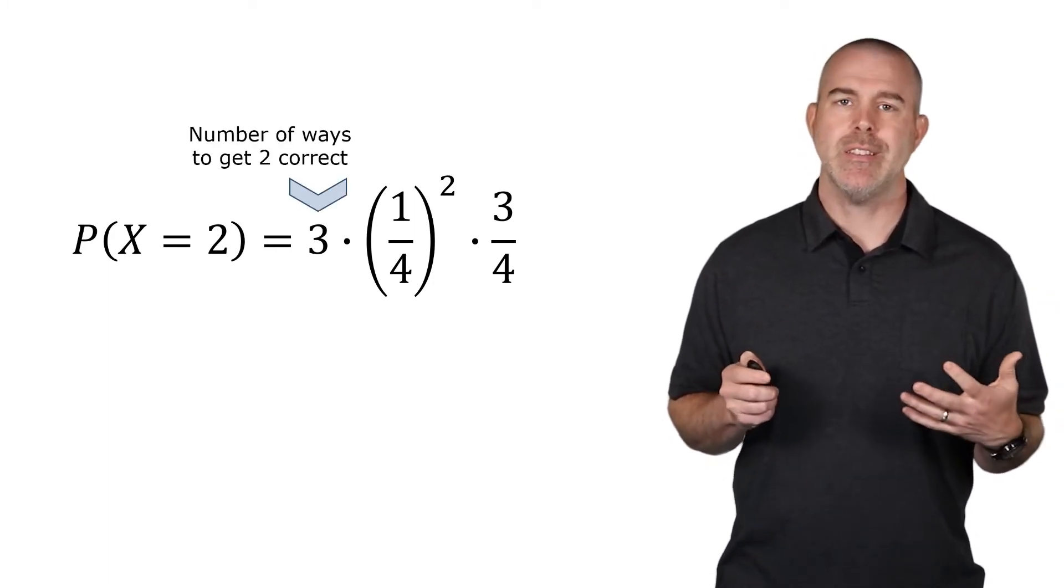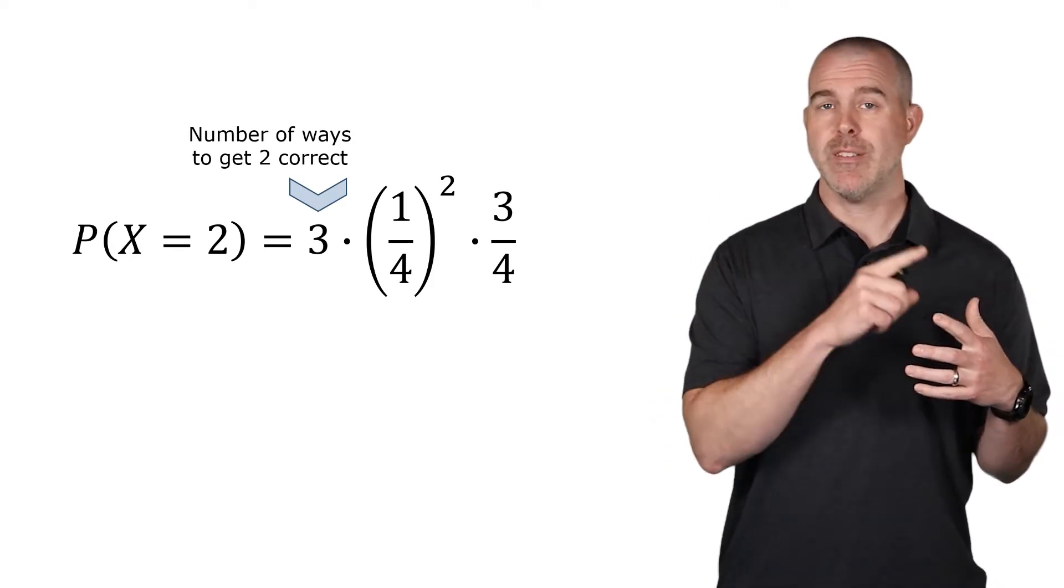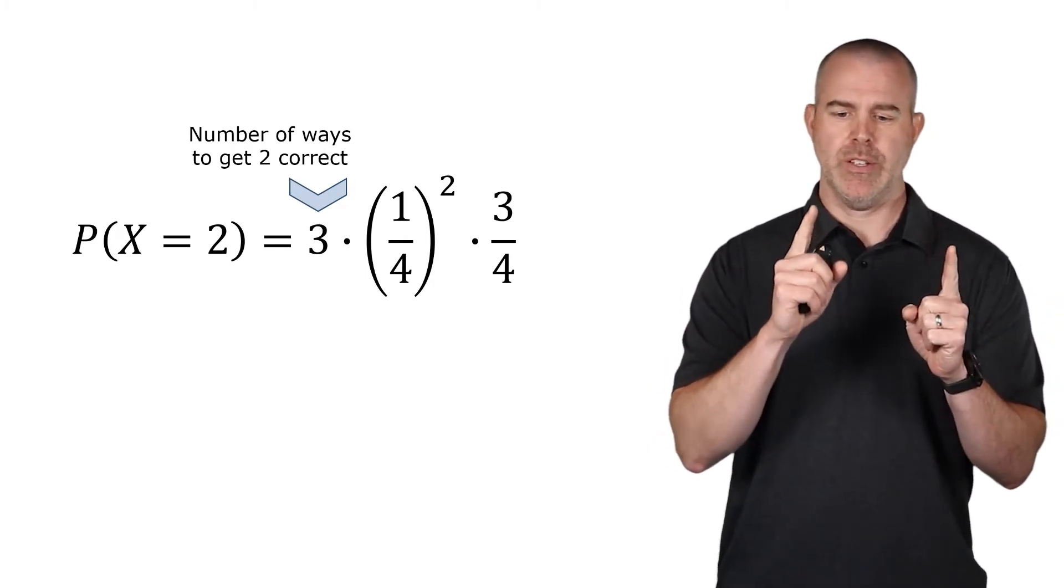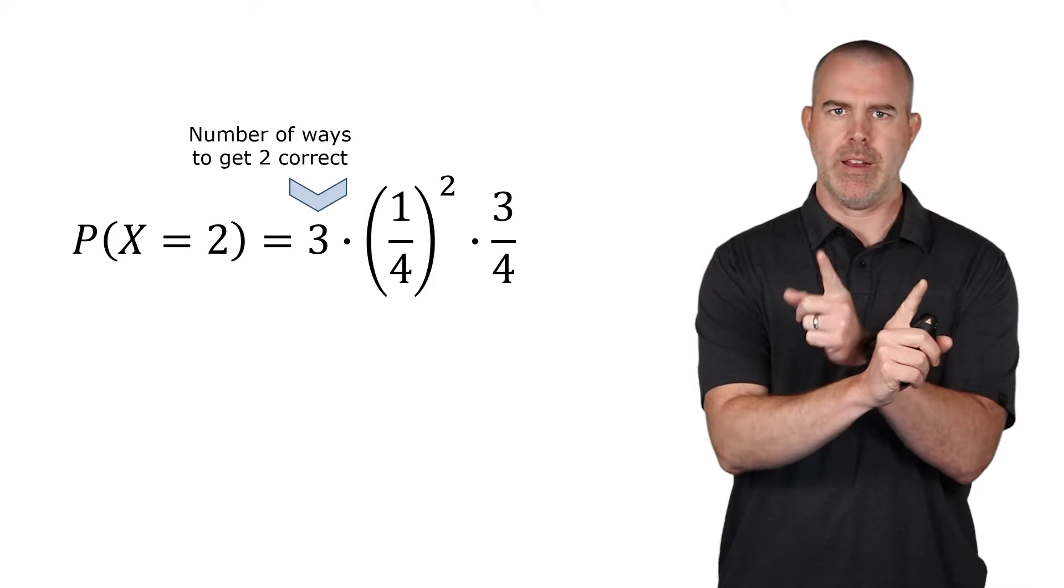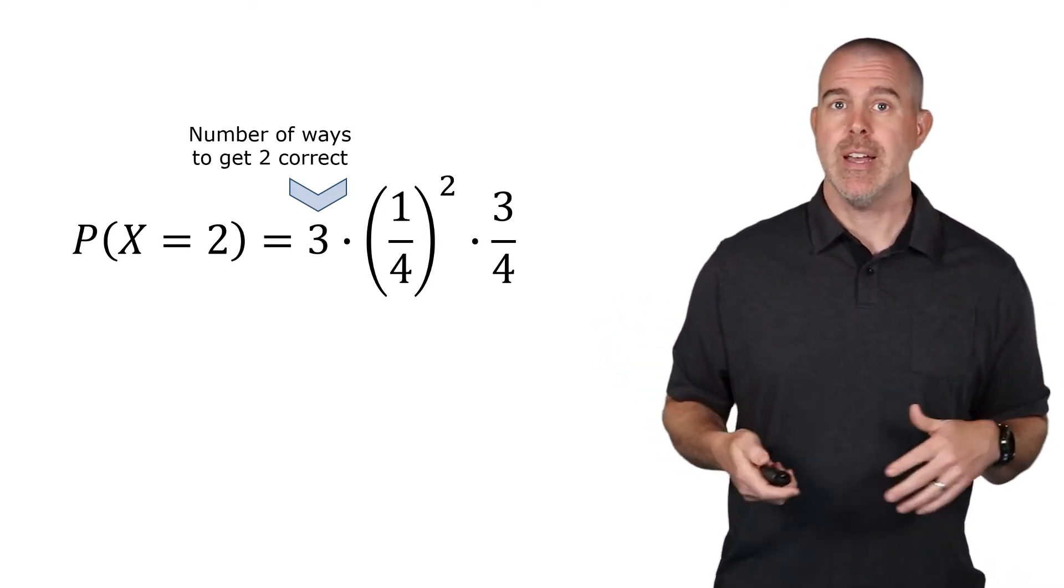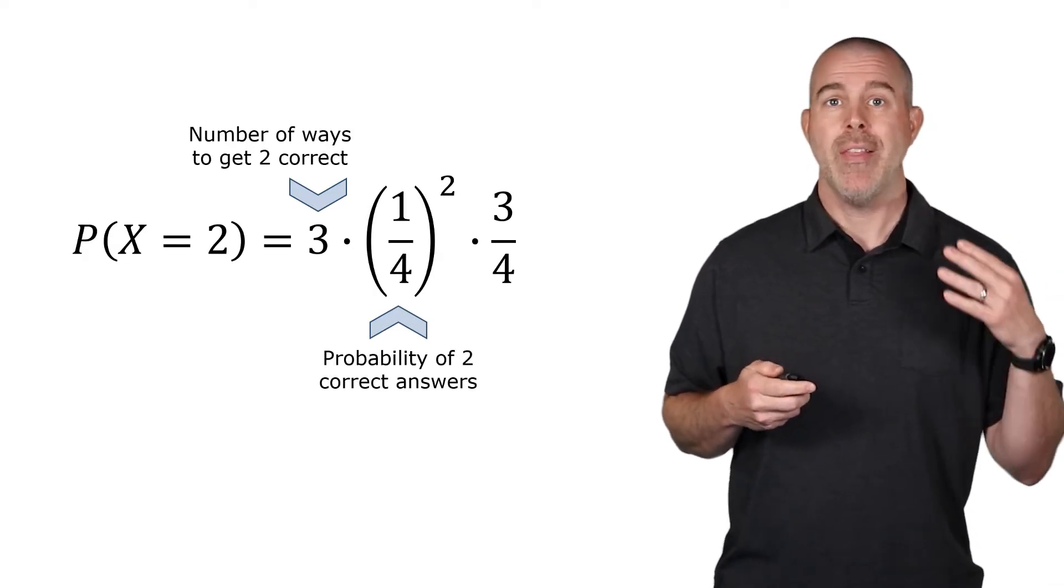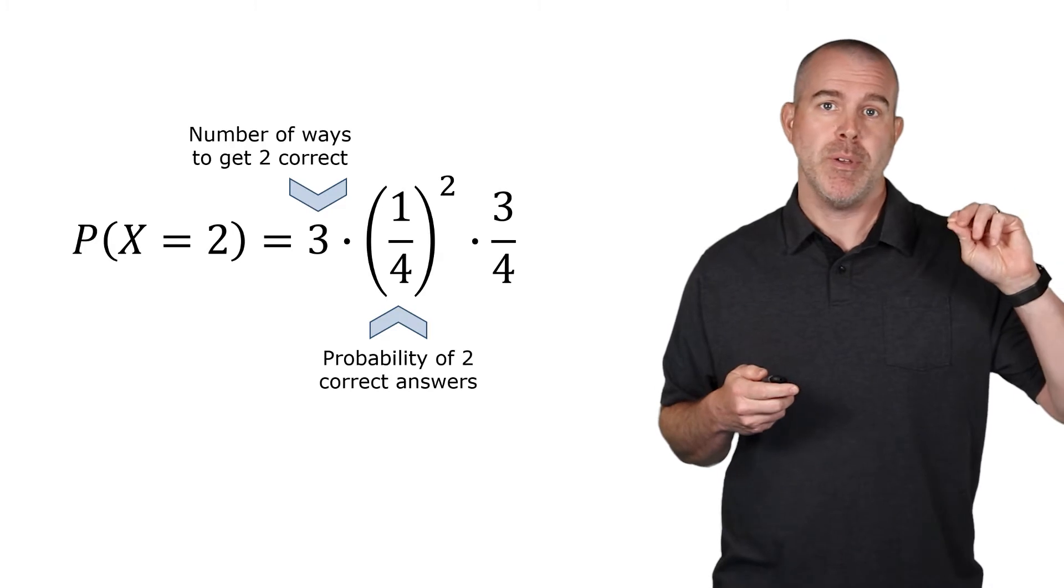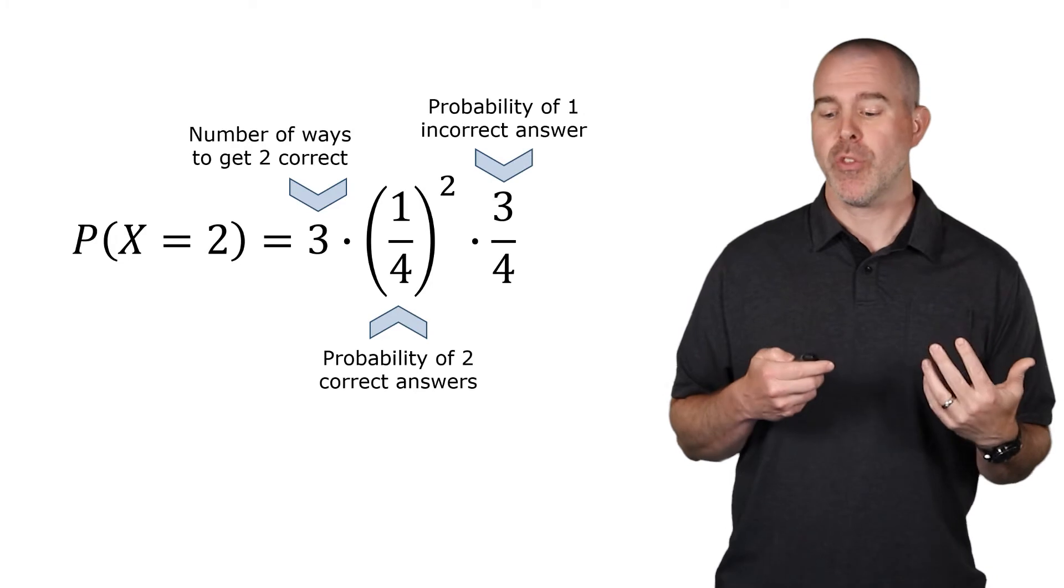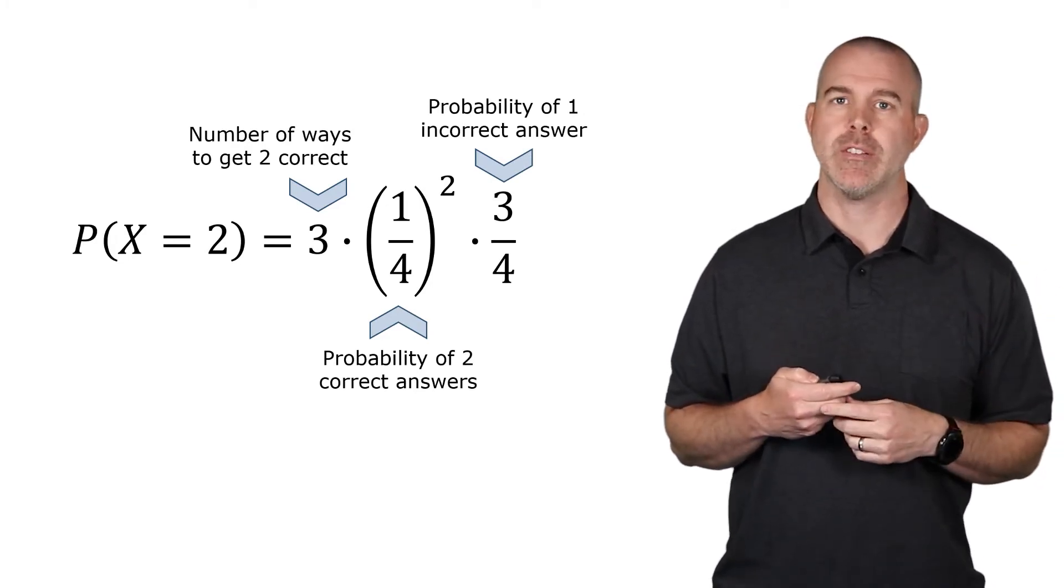The first is the three. This is just the number of ways you can get two correct. So if you think of those three spots, this is just how many ways you can choose two of them. The order doesn't matter because if it's correct-correct versus correct-correct, there's still two correct answers. So this is a combination, in fact. The next is that one-fourth squared. That's the one-fourth is the probability of getting it correct. And then the two is how many correct. And then, finally, the three-fourth to the first is the probability of getting one incorrect answer.